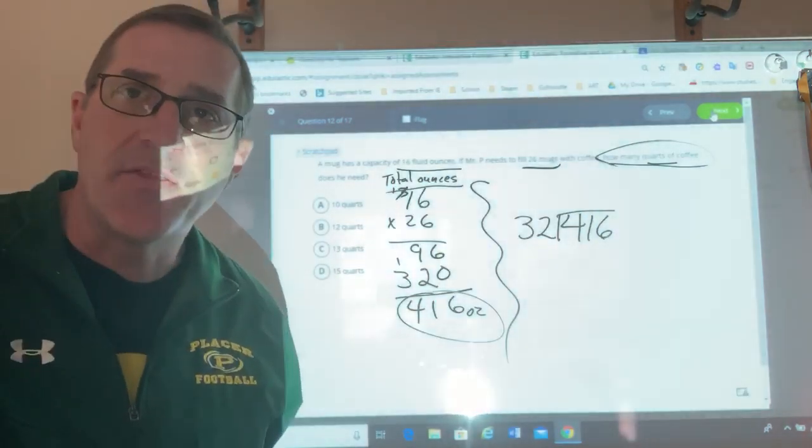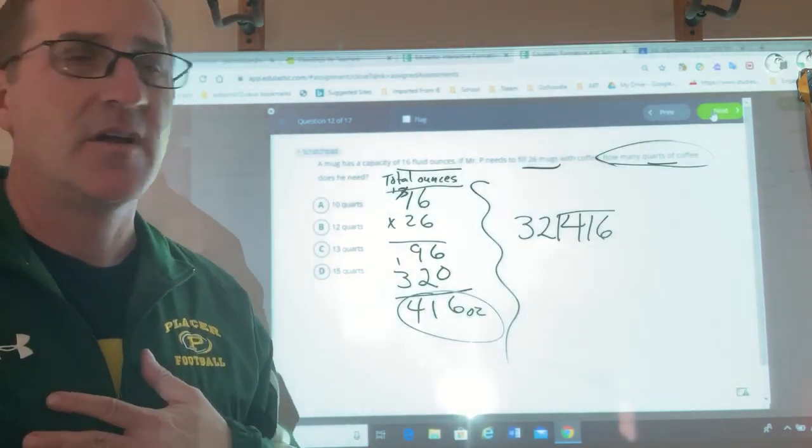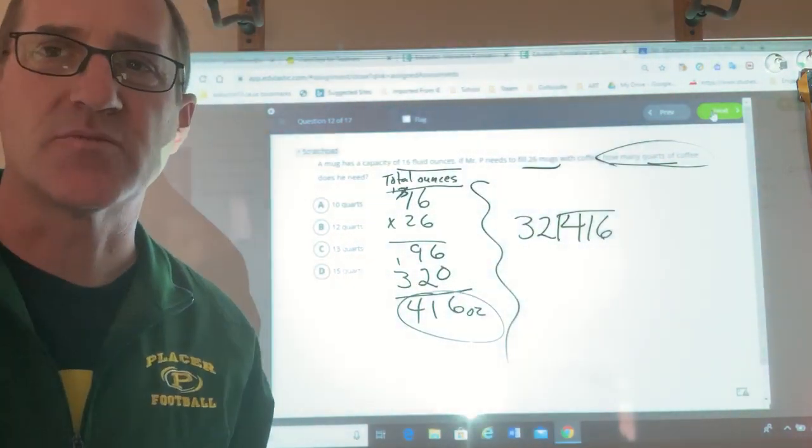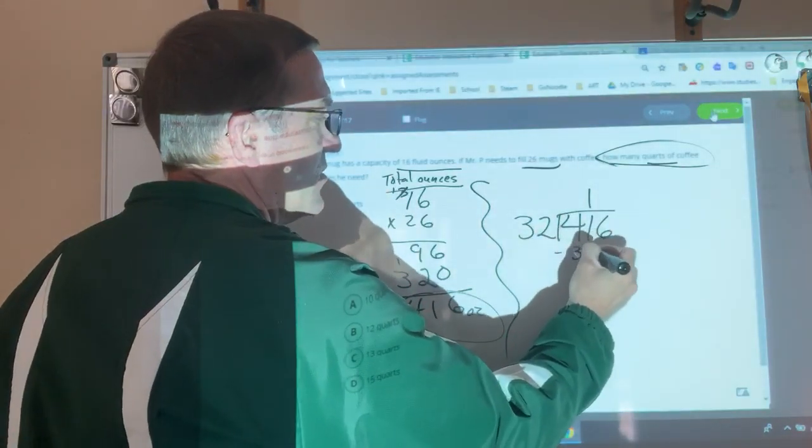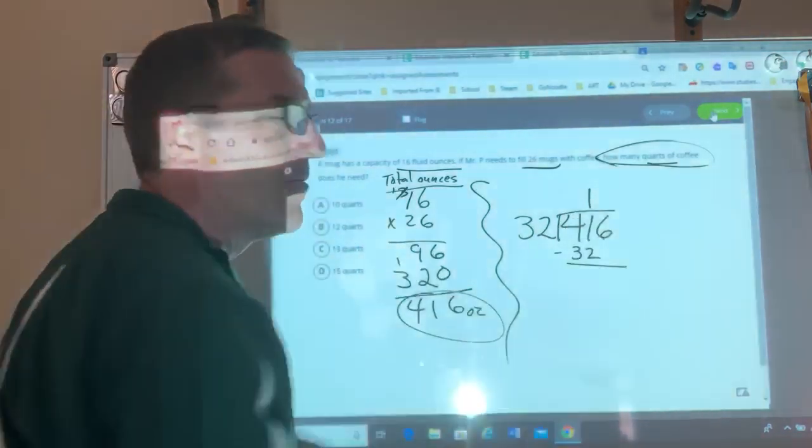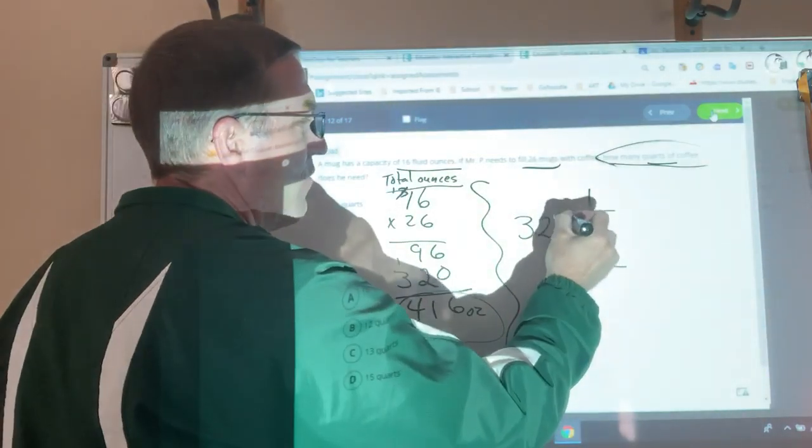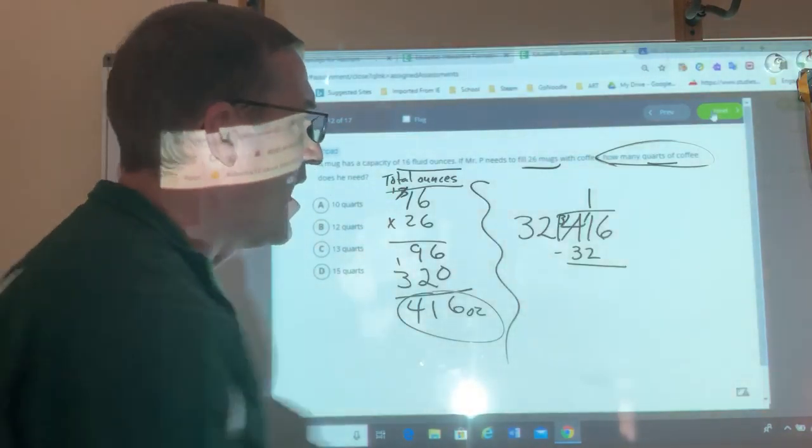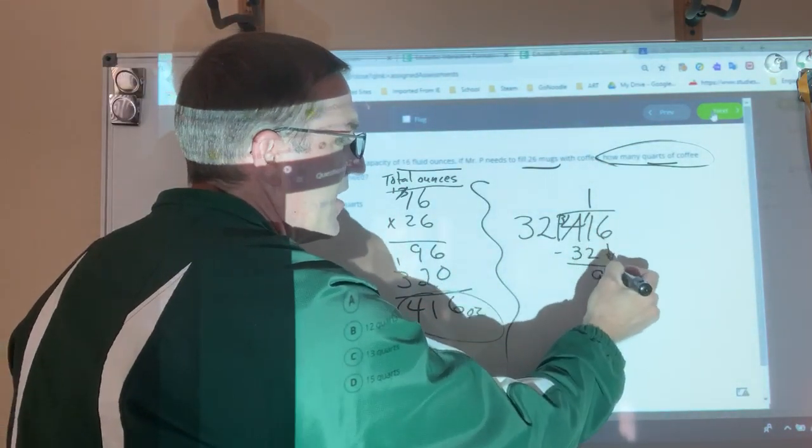How many 32s can I take from 41? I look at the 3 and that's a 4. I'm guessing it's probably just 1. So I'm going to put a 1 here and subtract 32. 1 minus 2. Can't do that. So I cross off my 4 and make that a 3. I get an 11. 11 minus 2 is 9. And 3 minus 3 is 0. Then I bring down my 6 and I get 96.